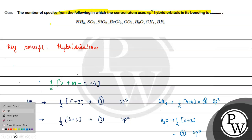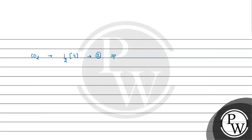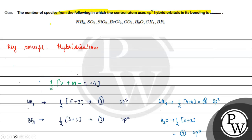Next, BeCl2. Beryllium is the central atom with 2 valence electrons. Chlorine is the monovalent species — there are 2 of them. So half of (2 + 2) equals half of 4, which is 2. That gives sp hybridization.